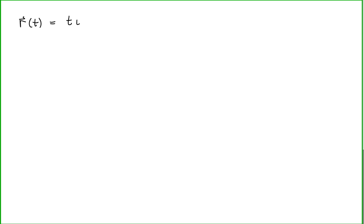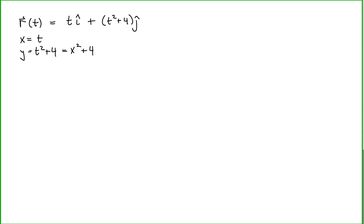We should recognize that the function they gave us represents a parabola, with an x-component of t and a y-component of t squared plus 4. We can see this more clearly by explicitly writing down the x and y components of our position function. Since x is equal to t, we can express y in terms of x, so y is equal to x squared plus 4.